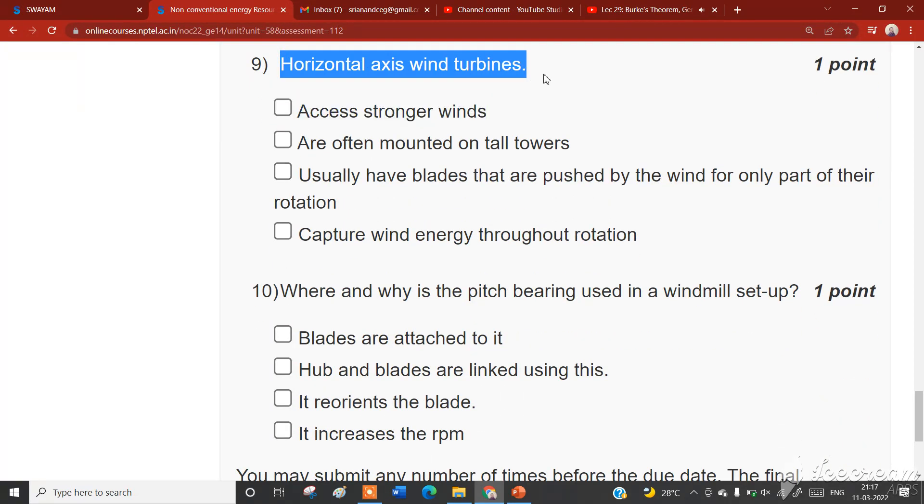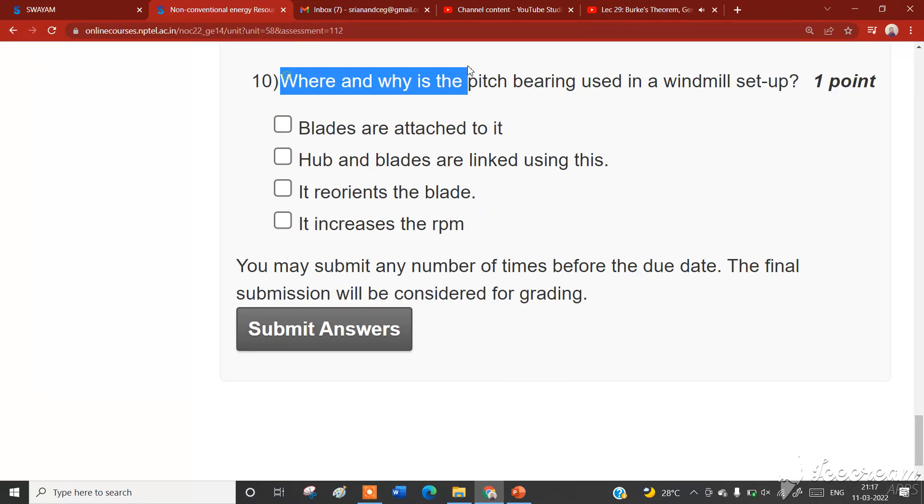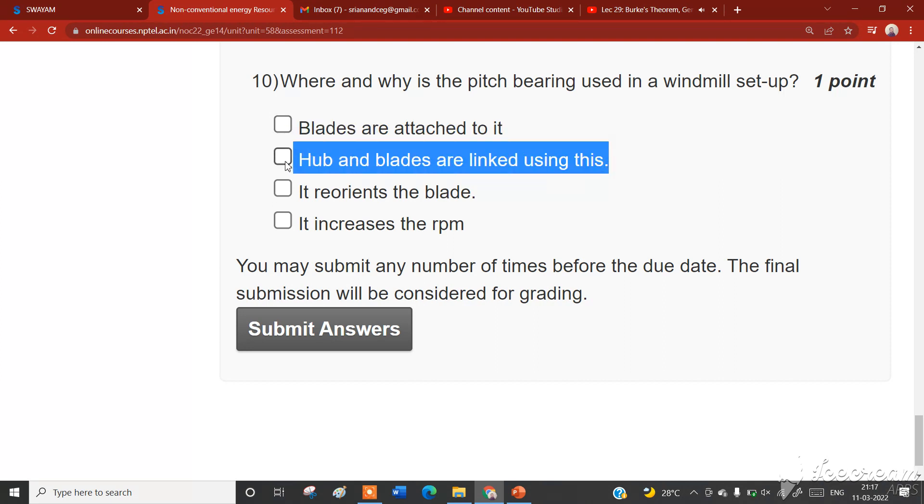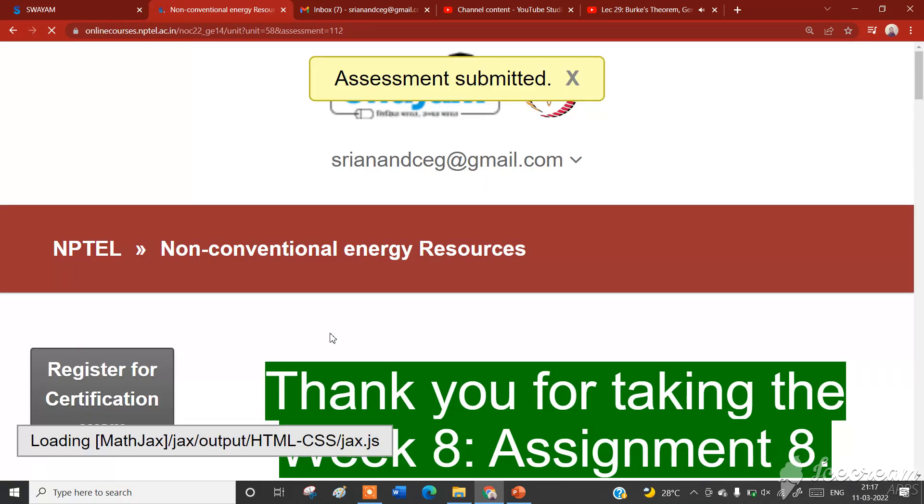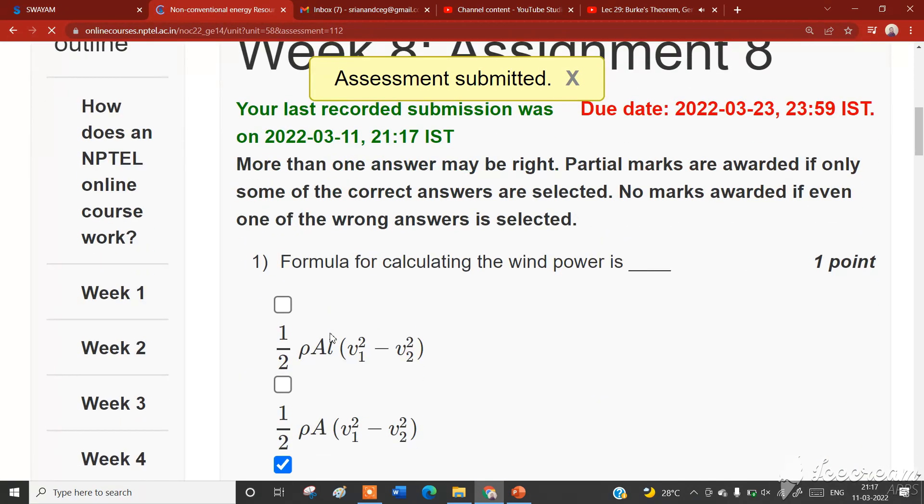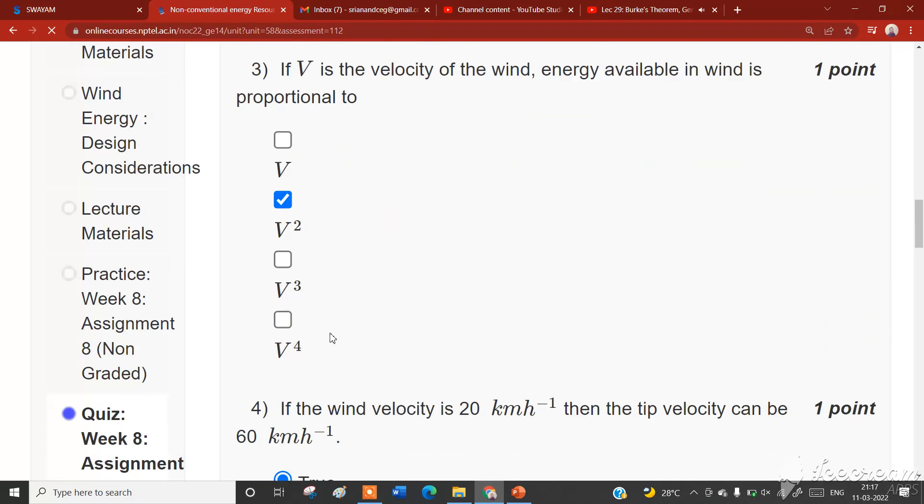This is the joint probability that there are k in the system at time t after the last departure. The last departure happened at tₙ' and time t has elapsed between the last departure and now, and you are seeing the system state. That is basically k, and this t is less than the inter-departure time. So inter-departure time is more than t, so L is greater than t.